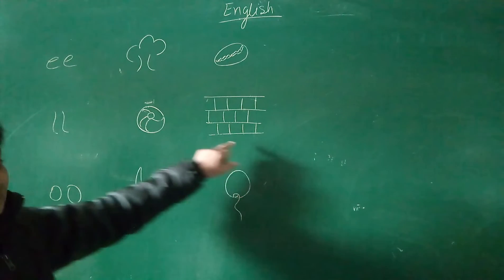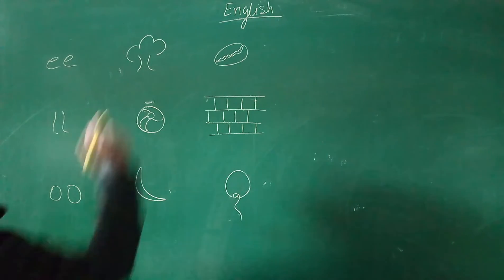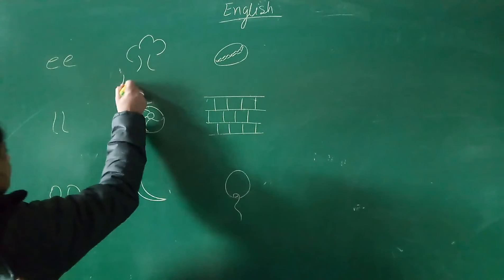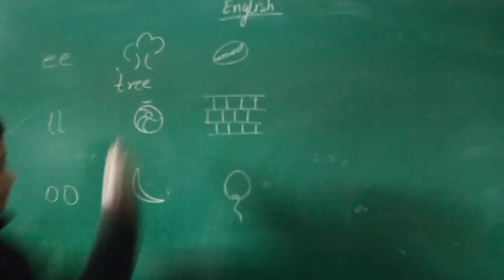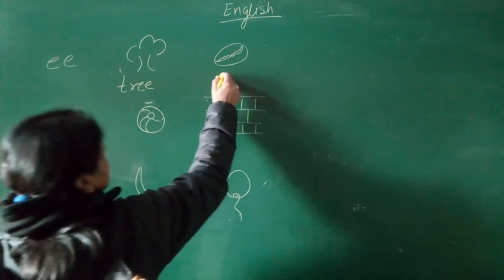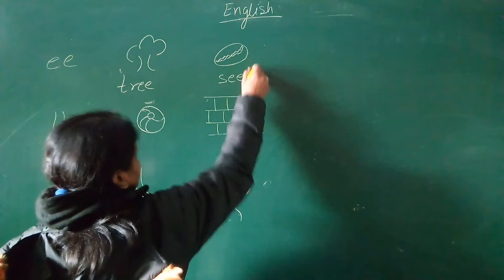Picture ball. This is ball, and you have to write the name also. T-R-double E, tree. This is S-double E-D, seed. This is B-A-double L, ball.